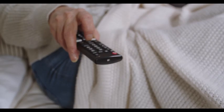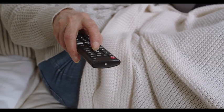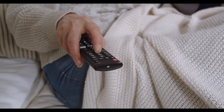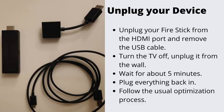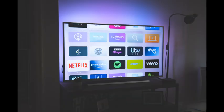Number 2: Unplug Your Device. This is another highly effective method we suggest you try next. Unplug your Fire Stick from the HDMI port and remove the USB cable. Turn the TV off and unplug it from the wall. Wait for about 5 minutes, then plug everything back in and follow the usual optimization process. Also, don't forget to check that you have selected the right source.